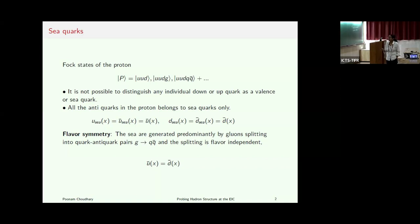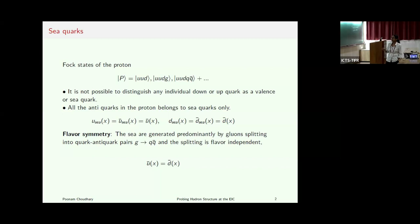Similarly for the D sea quarks, D-sea is the same as D-bar sea, which we denote D-bar of X. In the proton Fock state, if we write the leading Fock state, we have just valence quarks, then gluons appear, then sea quarks can appear and so on. There can be other higher Fock states as well. Sea quarks generally appear in the five-quark state and also through gluon splitting.